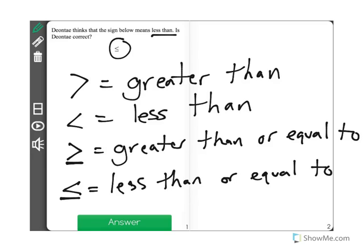So Deontay says that this sign up here means less than. But if you look, we can see that there's a line underneath representing or equal to. So no, he is not correct. They are actually different. One means less than. When you have a line underneath, it means or equal to.